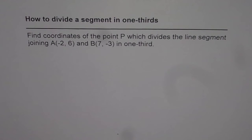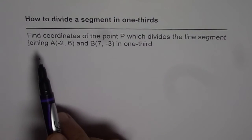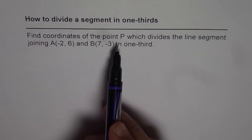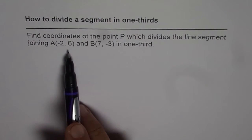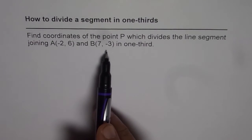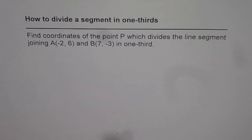Now let us understand how to divide a segment in one-thirds. The question is, find coordinates of the point P which divides the line segment joining A(-2, 6) and B(7, -3) in one-third.